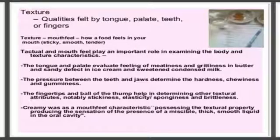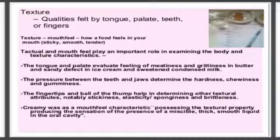Coming to the main topic — food texture and analysis. As written in the slide, what are the qualities felt during food texture and analysis? The qualities would be tongue, palate, teeth, and fingers. When any food is tested, its taste plays a main role. We have a lot of taste buds and our tongue can detect different types of tastes: sweet, sour, salty, etc.